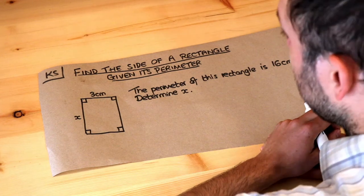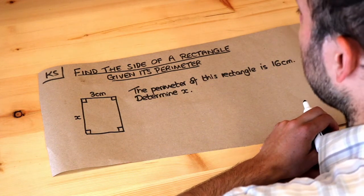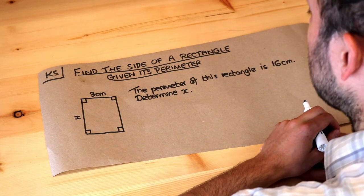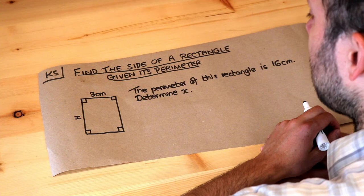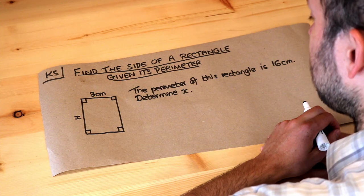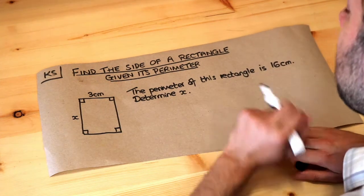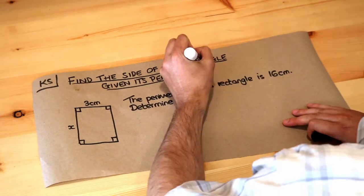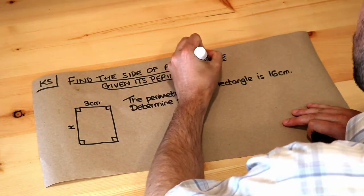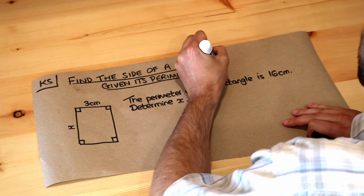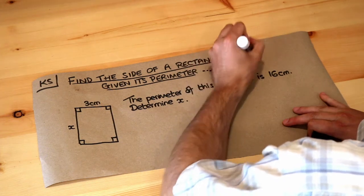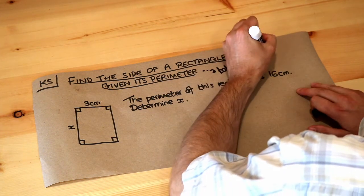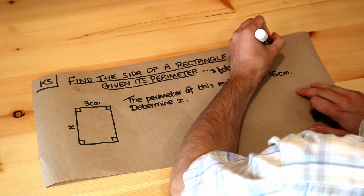Hello and welcome to this Dr. Ross Mass's key skill video on finding the side of a rectangle given its perimeter. In previous videos we saw that the perimeter of a shape is the total length around the outside of the shape.